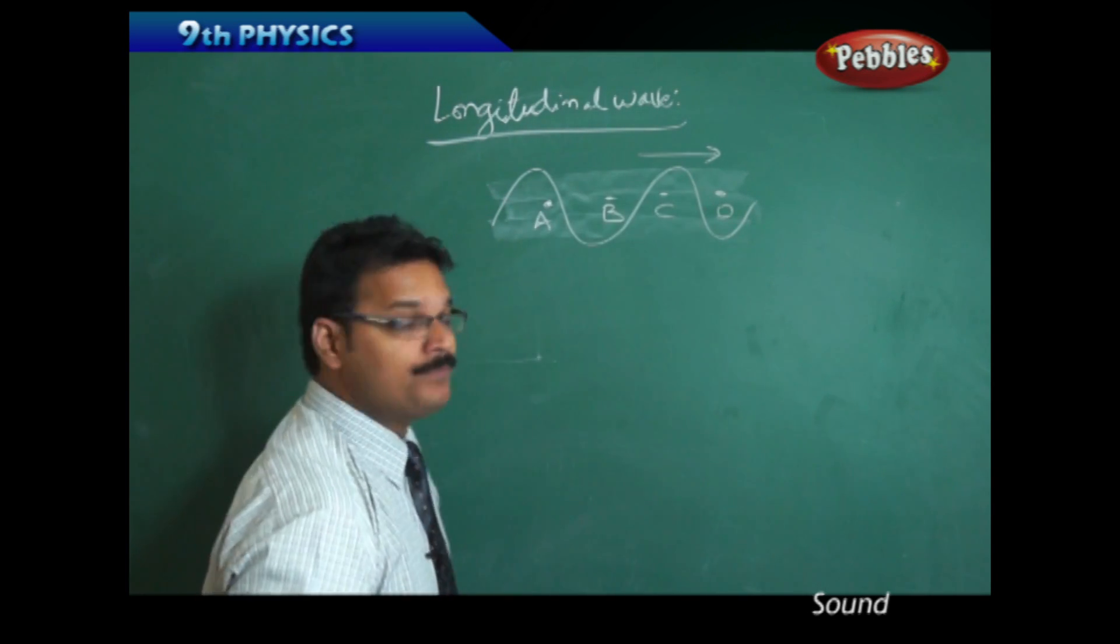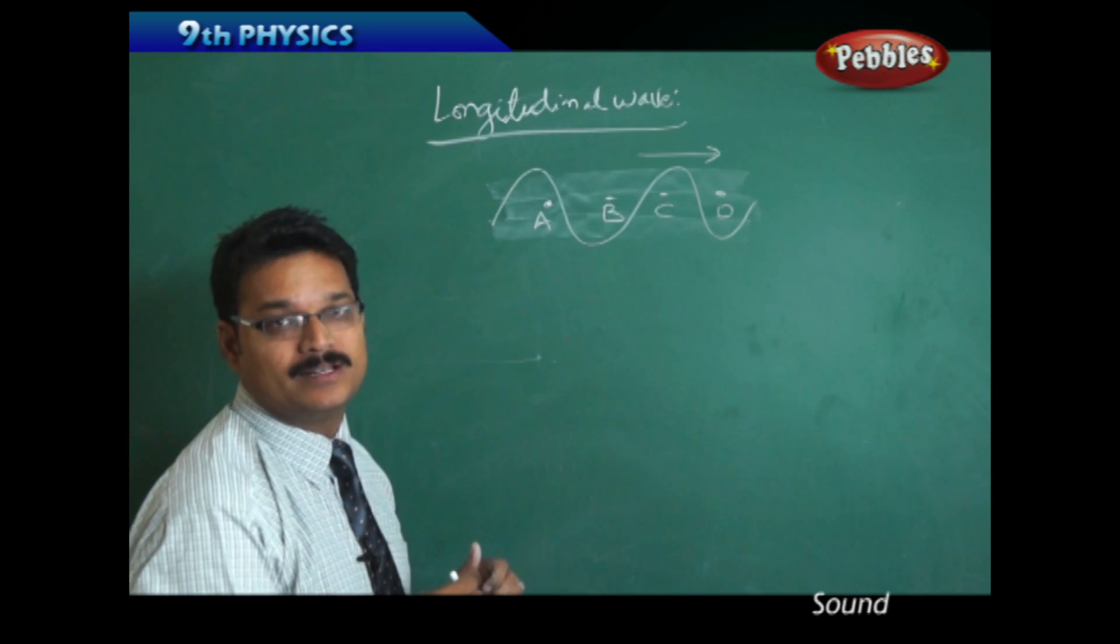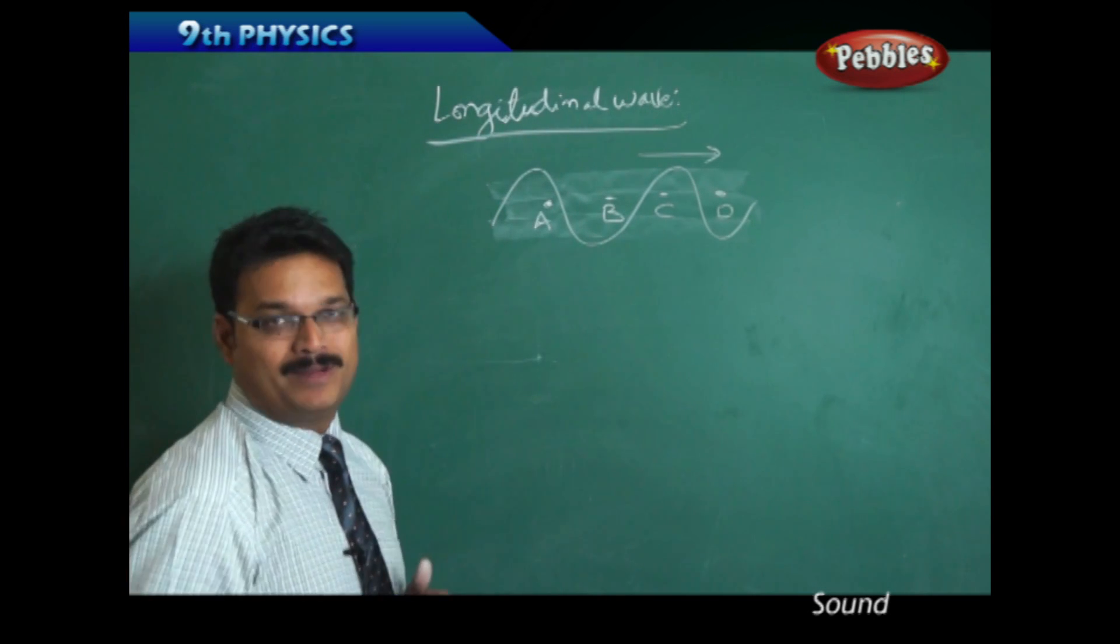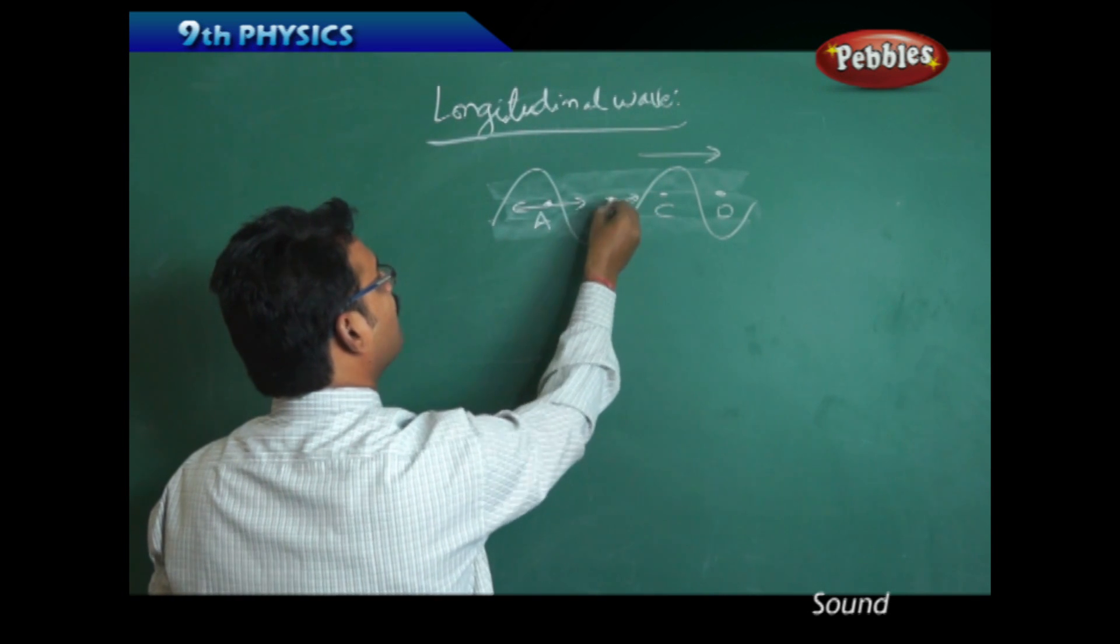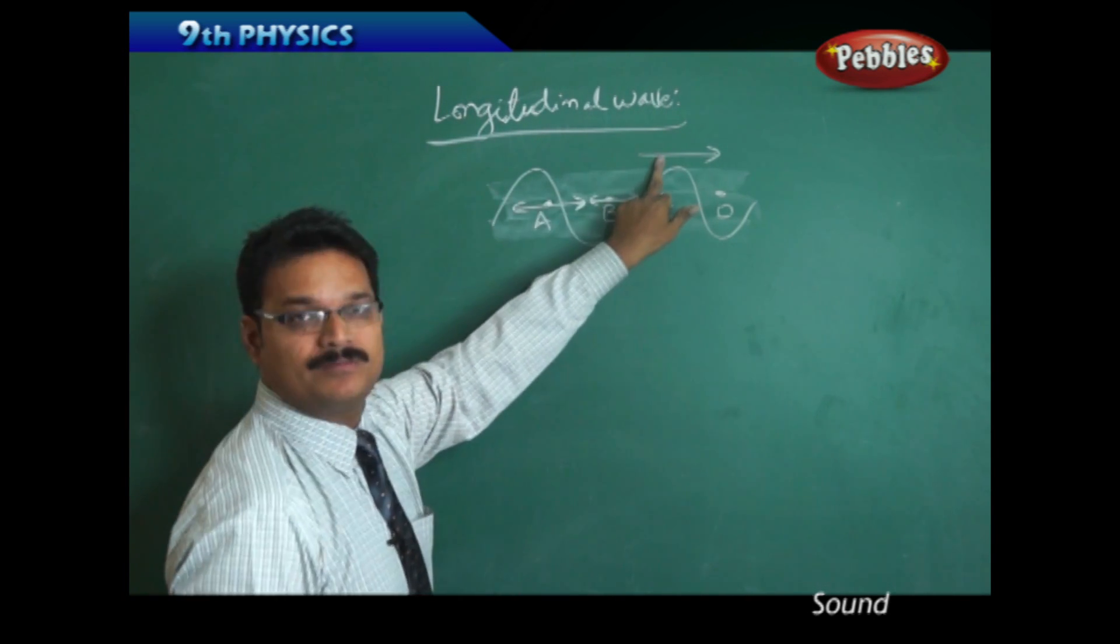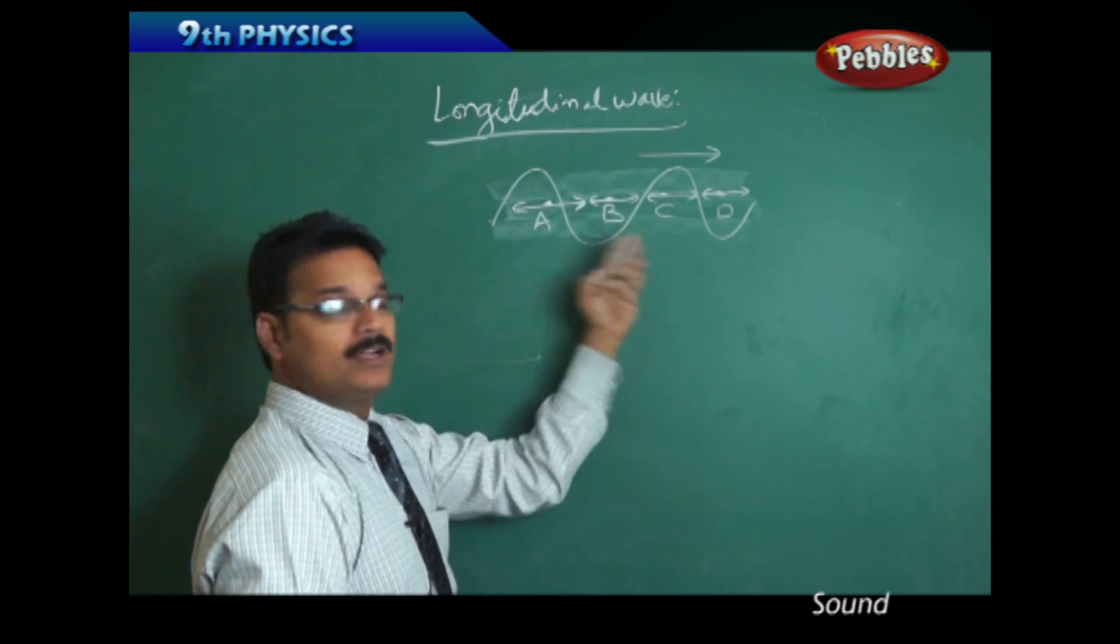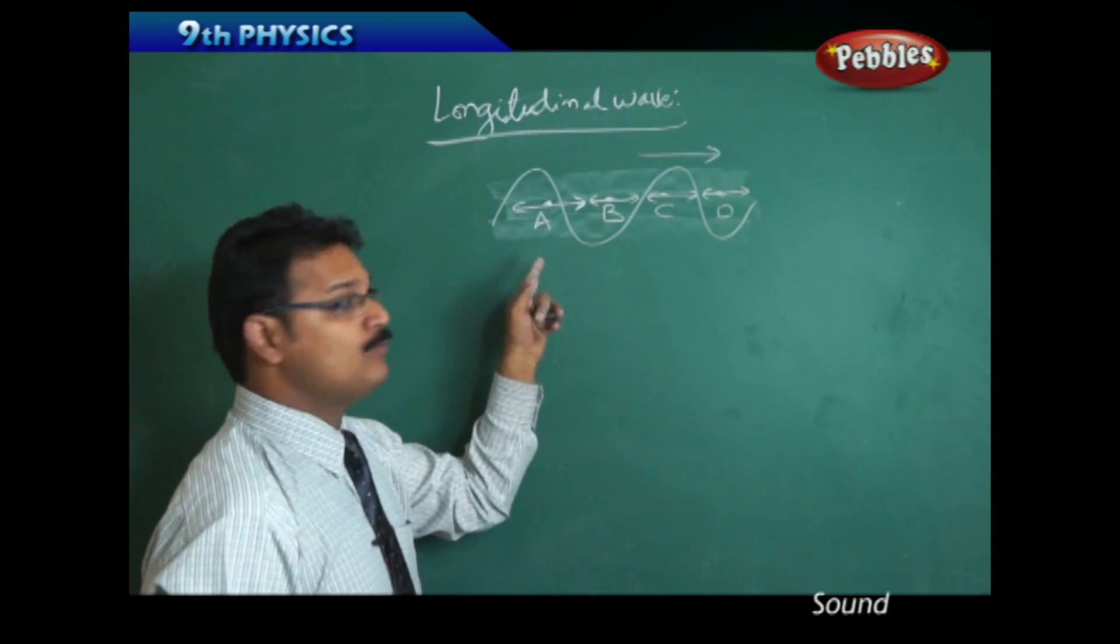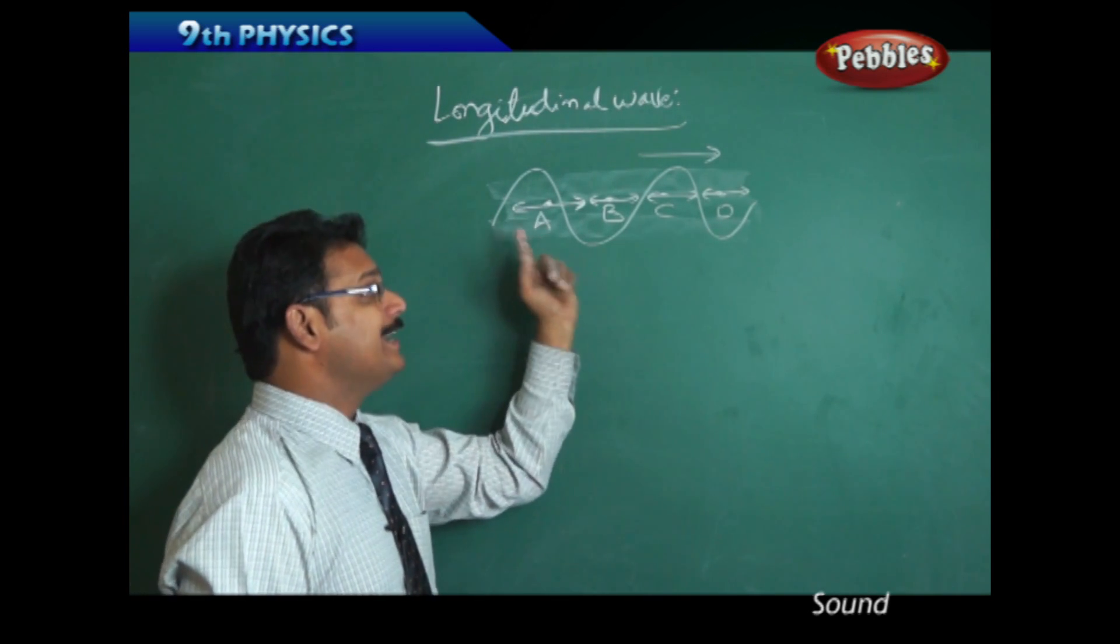When the wave travels through the medium, the particles won't remain at rest; they start vibrating. As I told earlier, for a wave to move forward, particles have to vibrate. These particles A, B, C start vibrating along the direction of the wave. So whenever a wave propagates in the medium such that the particles vibrate in the direction of the wave...